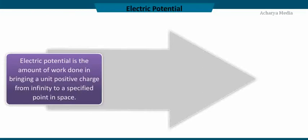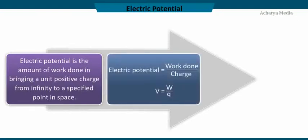We can define electric potential as the amount of work done in bringing a unit positive charge from infinity to a specified point in space. It can be represented in the form of equation as electric potential is equal to the work done by charge, or V is equal to W by Q.